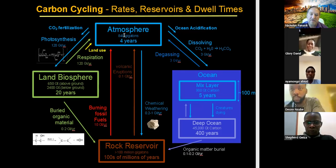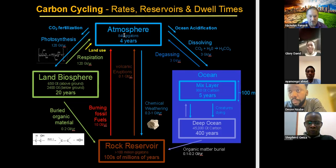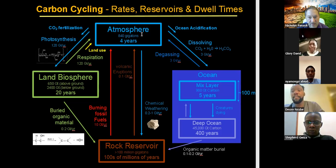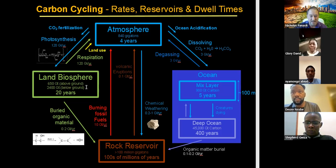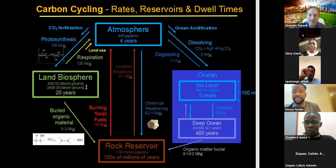In the atmosphere — and remember, when we talk about these large numbers they are estimates so they can vary a little bit — but around 840 gigatons of carbon. In the land biosphere above ground, so mostly trees, plants, and organisms, we're talking about 650 gigatons — a little bit less than what's in the atmosphere.